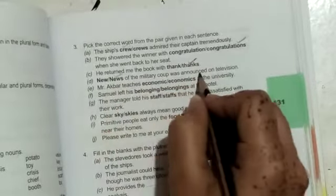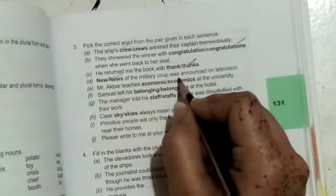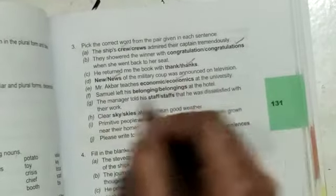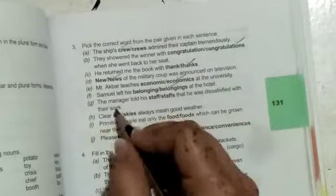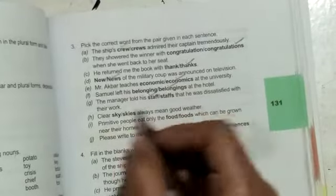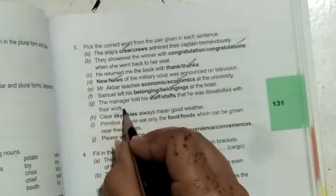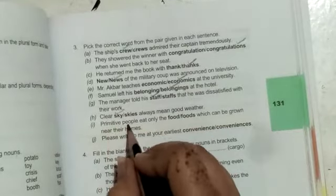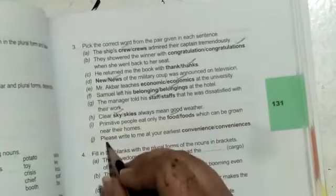News of the military coup was announced on television. Mr. Akbar teaches economics at the university. Samuel left his belongings at the hotel. The manager told his staff that he was dissatisfied with their work. Clear sky always means good weather. Primitive people eat only the food which can be grown near their homes.